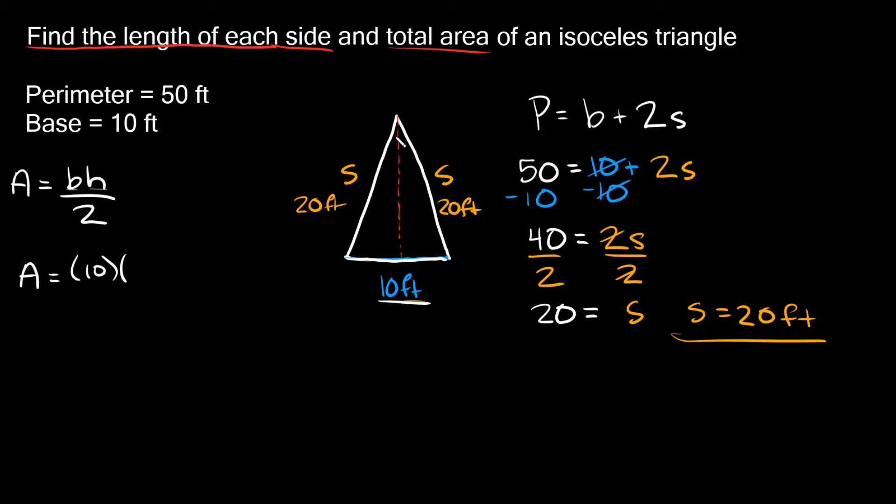So how can we figure out the height here? Well in order to do that we're actually gonna have to use the Pythagorean theorem. Remember the Pythagorean theorem applies to only right triangles. But something that you might notice is when we drew this vertical line we made a right angle right here, so then we basically have our right triangle right here.